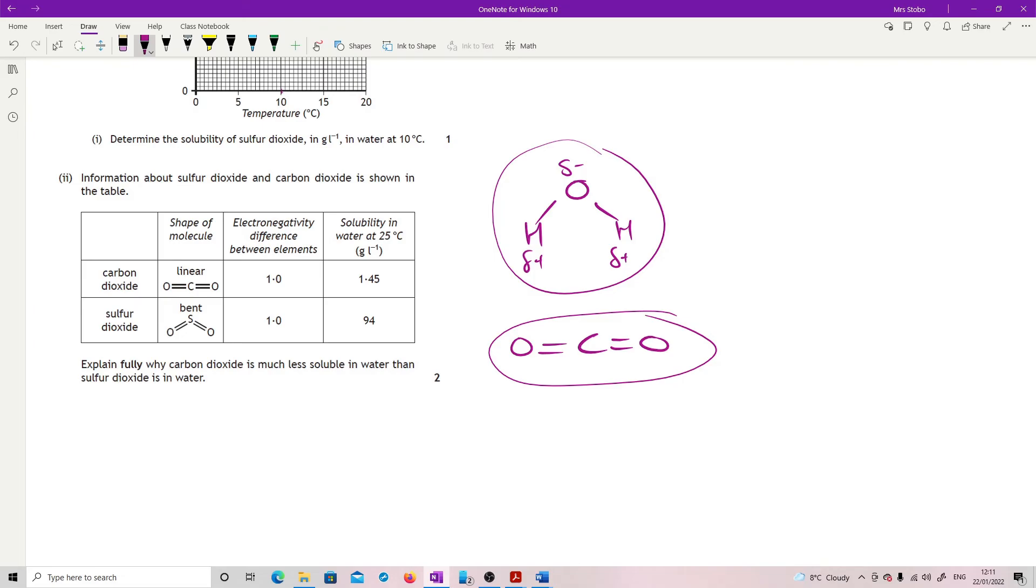Sulfur dioxide, on the other hand, has exactly the same polarity in the bond, it says, because it's got a difference of one. But what you've got is a bend in the shape. If you've got a bend in the shape, then we now have asymmetry in the molecule. We can always tell which side we're looking at. And if we can always tell which of that, then we have not only polar bonds, we now have a polar molecule as well. So this means that this will associate quite happily with water, which is why it's massively more soluble. You know, 1.4 grams compared to 94 grams. And that's it.